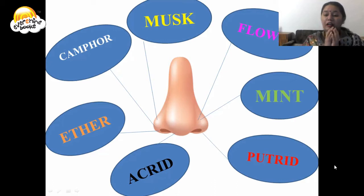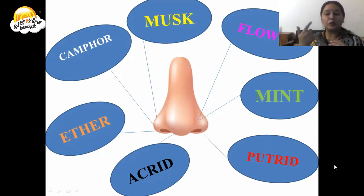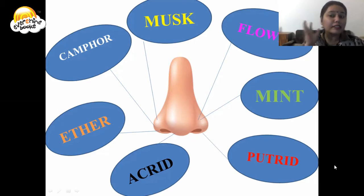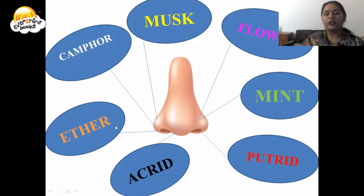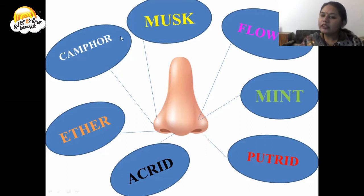The next is putrid — the smell of decaying items like rotten eggs. Your nose immediately senses it and the brain sends a signal that it is a very pungent smell. Next is an acidic smell, and then ether — a colorless, highly volatile liquid that also catches fire easily.